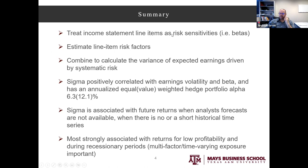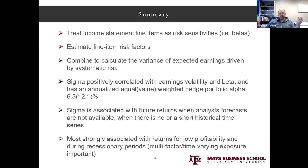Once we have income statement items as betas and the associated risk factors, it becomes a math exercise to calculate the variance coming from systematic risk — the expected variance from systematic risk. Let me highlight the main results. We do all this and measure what we call sigma, the standard deviation of expected earnings. It's highly correlated with other earnings volatility measures and with betas, and it's incrementally informative about future returns relative to other factors.